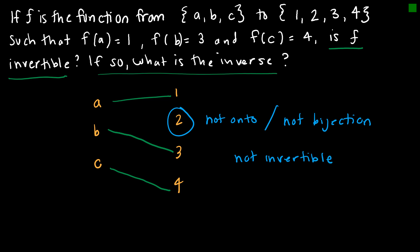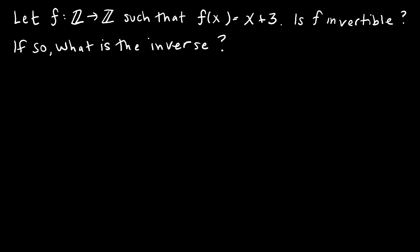Let's try another. Let's look at another example. We have now the function F that maps the integers to the integers, such that F of X is equal to X plus 3. Same questions, is it invertible? If so, what's the inverse? So we'll start by answering, is it invertible? How do I know it's invertible? It has to be 1 to 1, which I'm going to check, and it has to be onto, which I'm going to check.